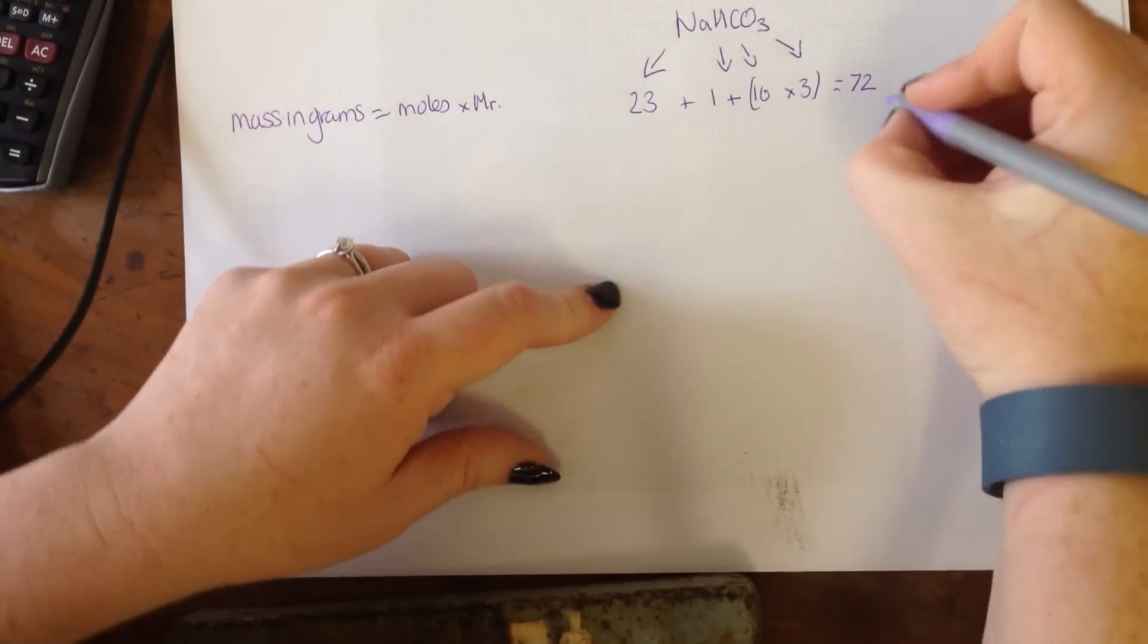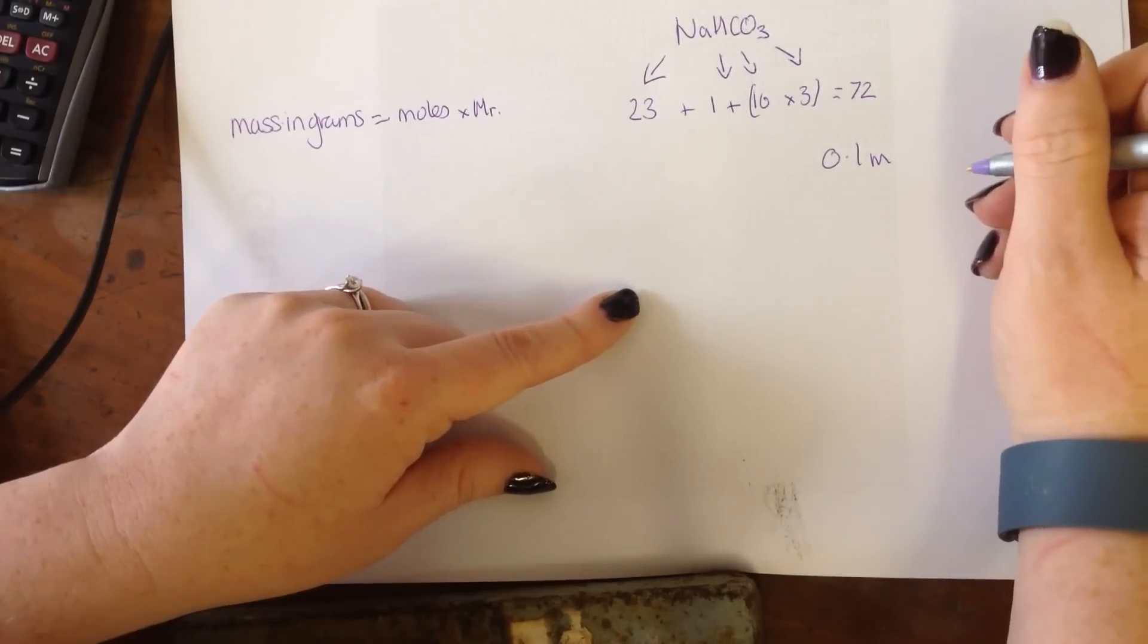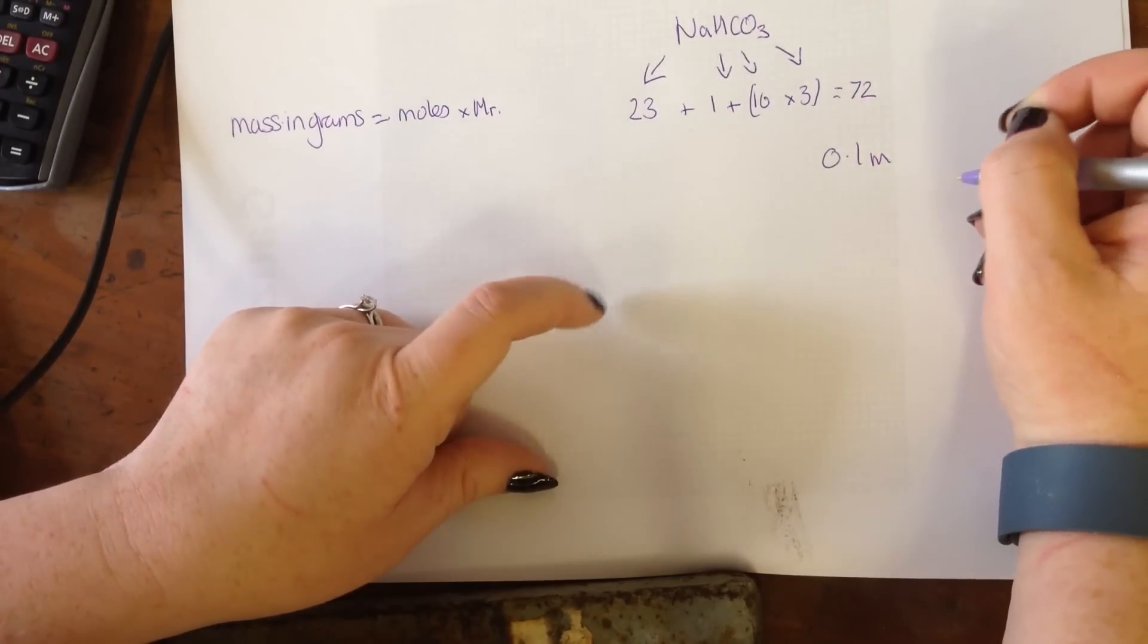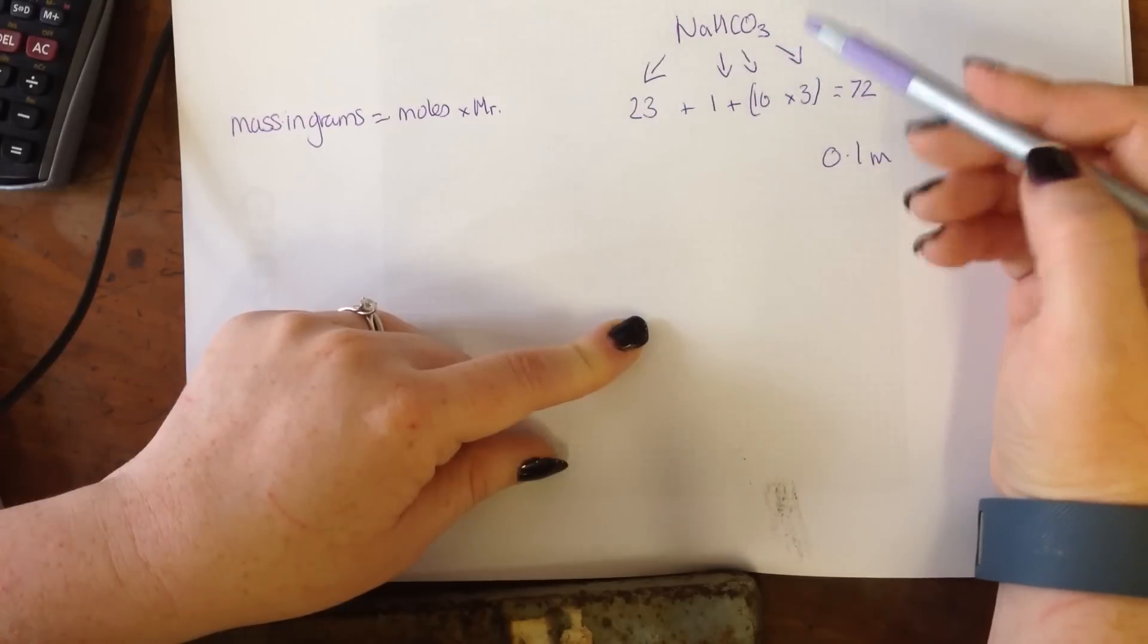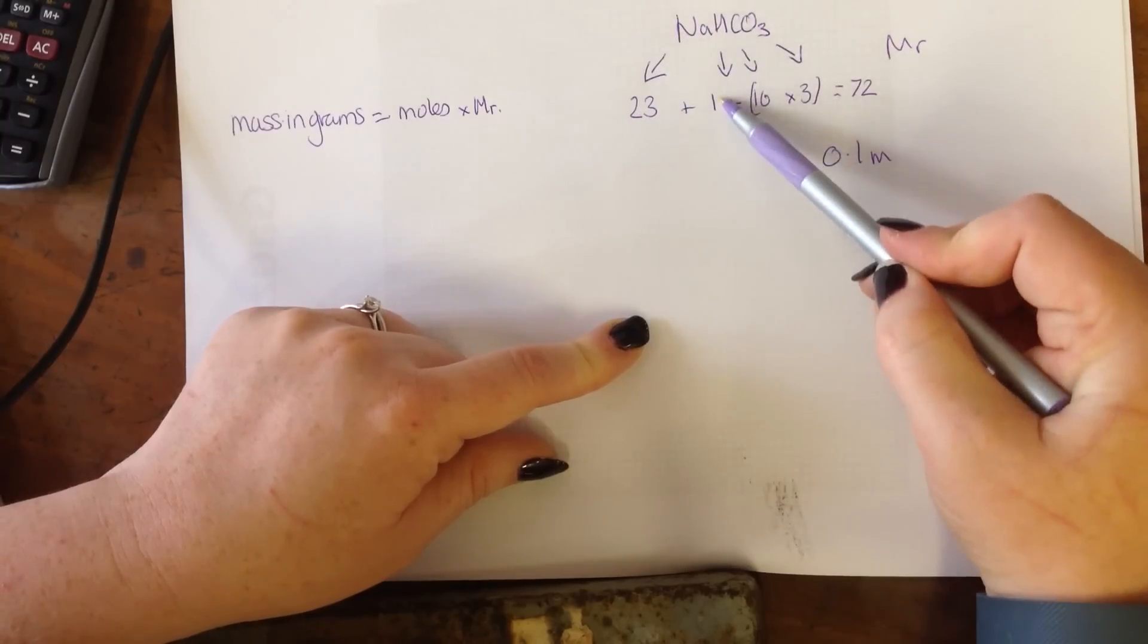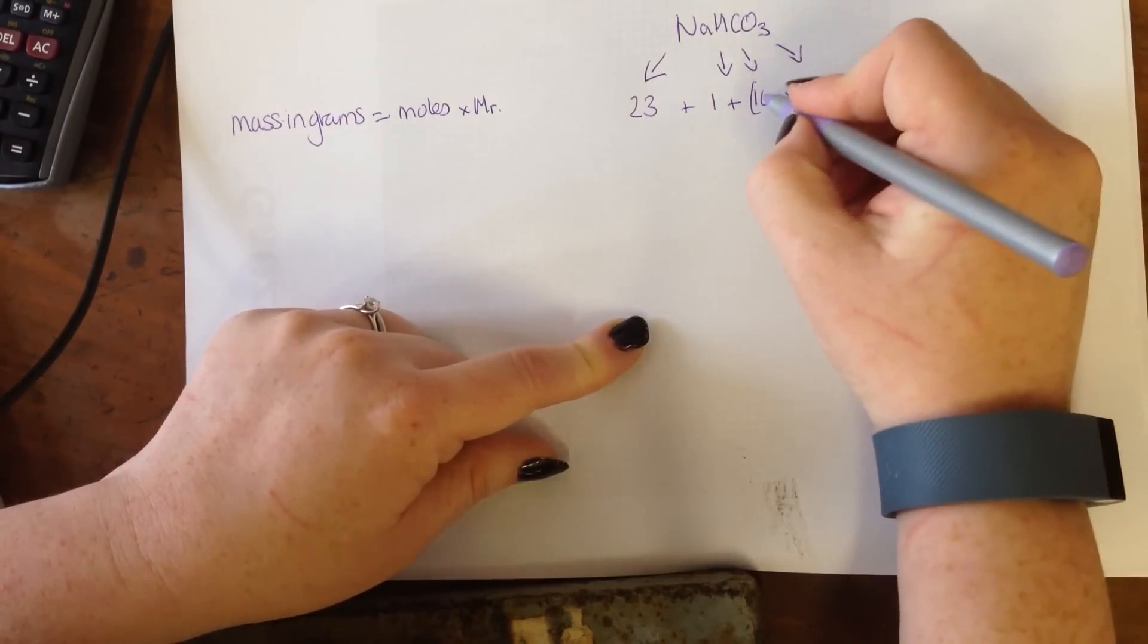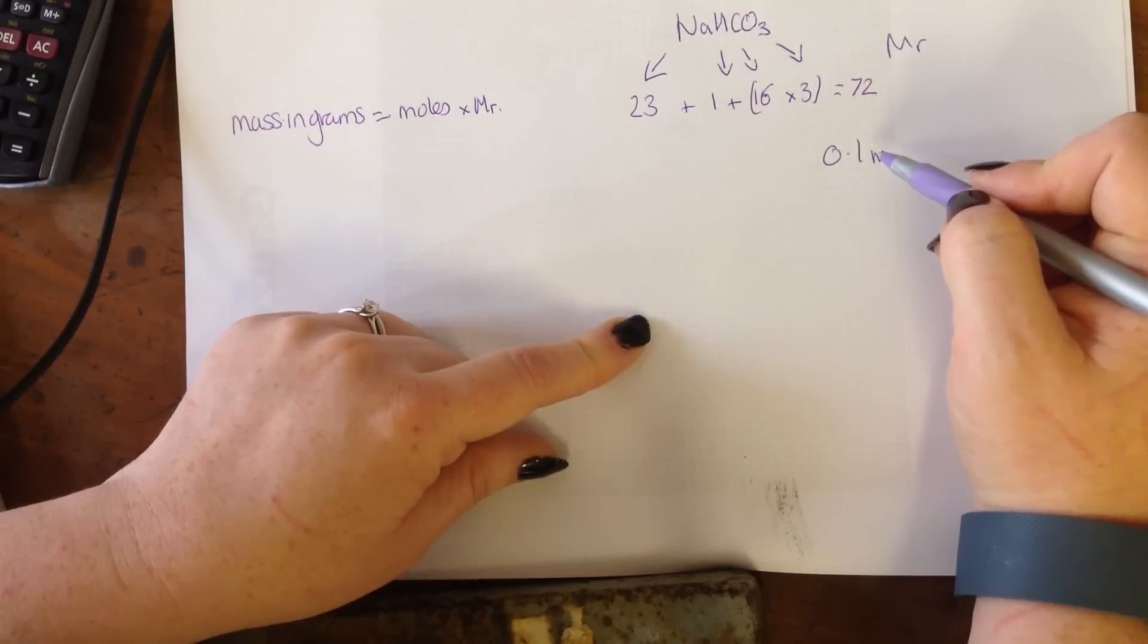I want to make a 0.1 molar solution of sodium hydrogen carbonate. First of all I need to know how much to weigh out. The formula is sodium hydrogen carbonate and I need to work out the MR. Sodium is 23, hydrogen is 1, carbon is 12, and oxygen is 16 with 3 of those. So the MR of sodium hydrogen carbonate is 84.